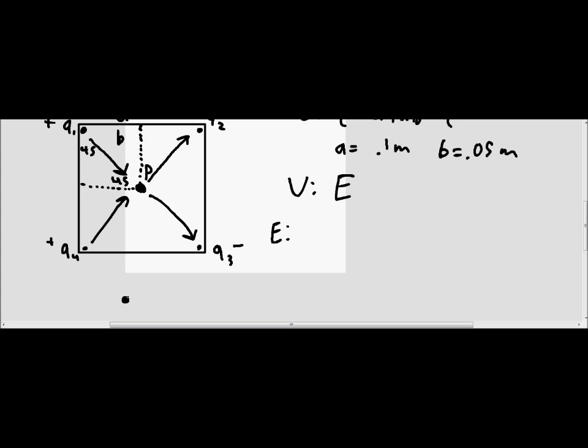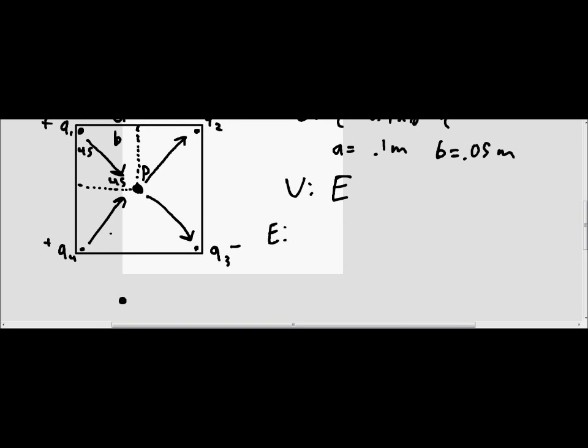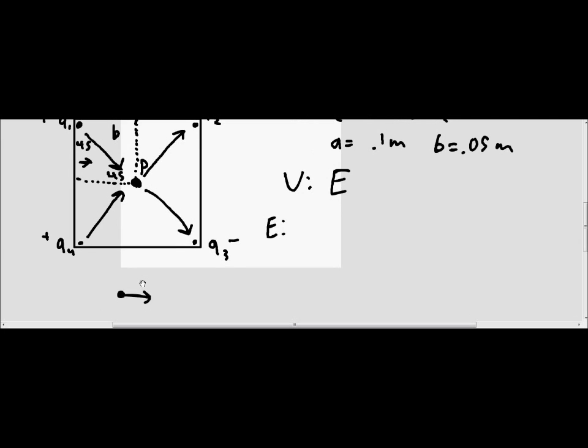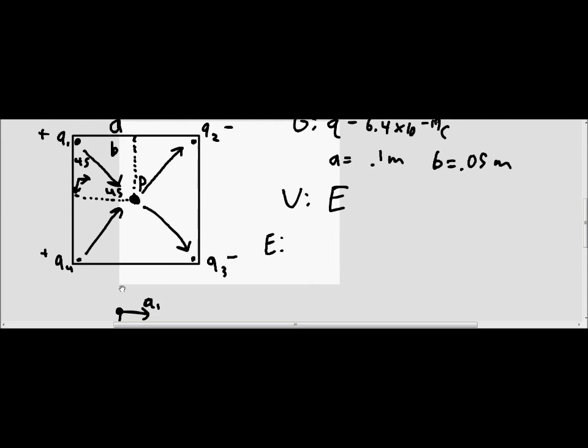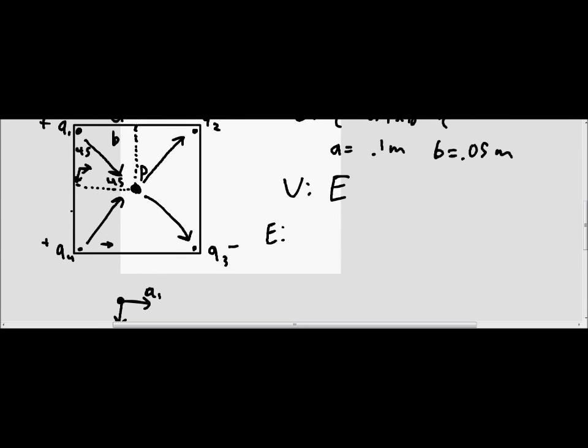So in our free body diagram, we're going to put the x and y component of q1. So the x component of q1 is pushing in that direction, so we're going to have a little arrow going that way. And it's also pushing in a downward direction, so we're going to have a little arrow pointing that way. Then we've got q4, which is also pushing in this direction, but it's pushing upward. And these two are identical because they're both the same magnitude and they're both going to the same point, which is the same distance from both of them.